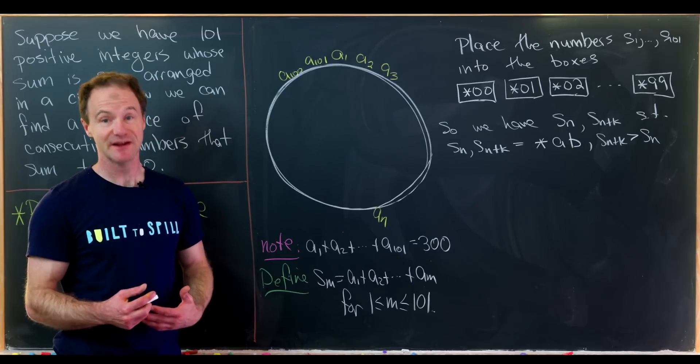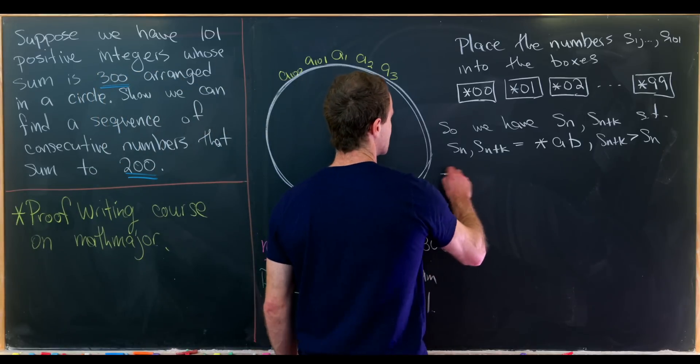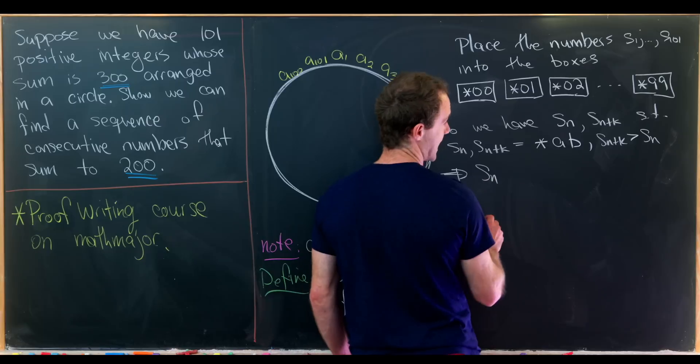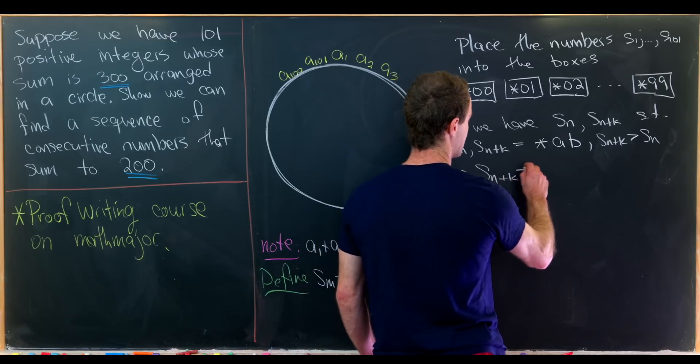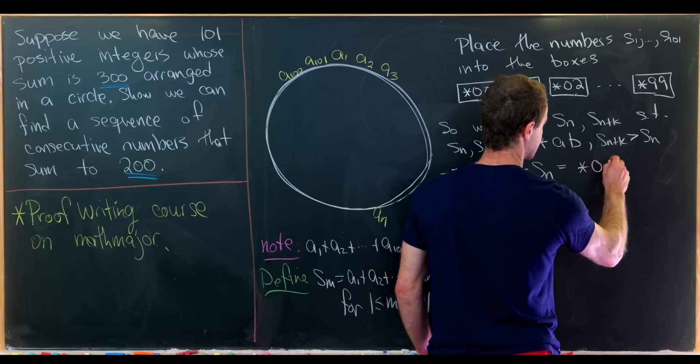then if we take their difference, their difference ends in 00. So we have s sub n plus k minus s sub n equals star 00.